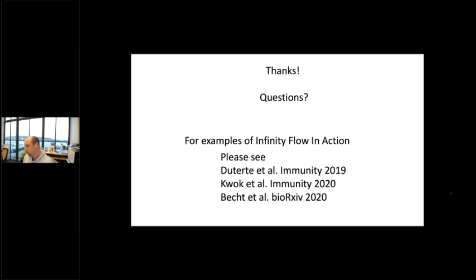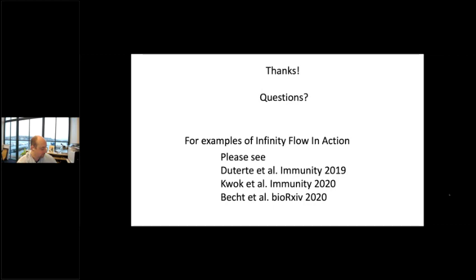Final question addressed: when inferring the expression of every marker on every cell, how does the algorithm know which infinity markers are co-expressed or not on a specific cell?